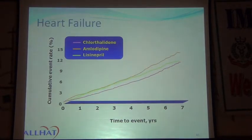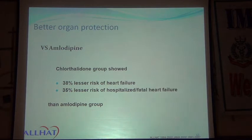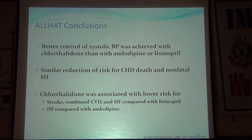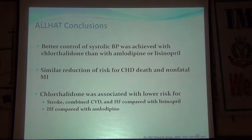Looking at stroke and heart failure outcomes: compared with amlodipine, the chlorthalidone group had 38 percent less risk of heart failure. Compared with lisinopril, the chlorthalidone group had 15 percent lesser risk of stroke and 19 percent lesser risk of heart failure. The conclusion: better control of systolic blood pressure was achieved with chlorthalidone than with amlodipine or lisinopril, with similar reduction of risk for CHD death. Chlorthalidone was associated with lower risk for stroke and heart failure compared with lisinopril, and lower risk of heart failure compared with amlodipine.